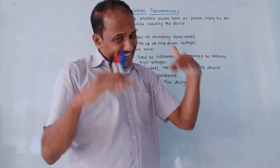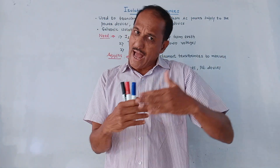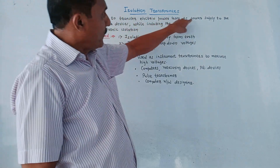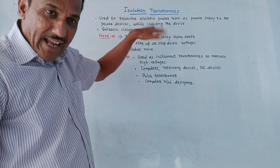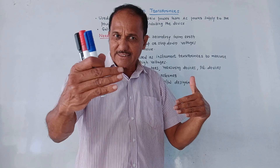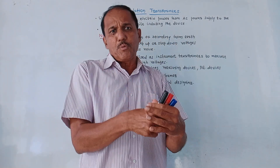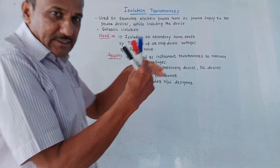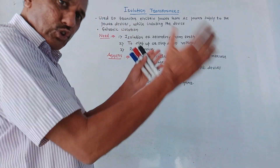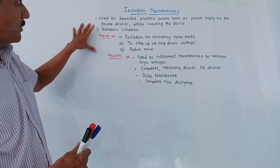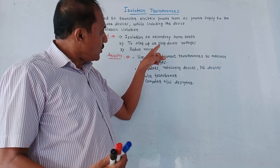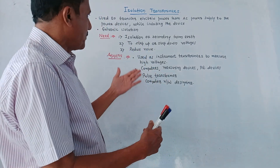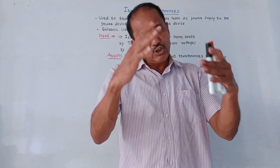Next is isolation transformers. As the name indicates, these are transformers used to isolate the power devices from AC mains. They transfer electric power from an AC power supply to the power devices while keeping the devices isolated. Like a normal transformer, it has primary and secondary windings with no physical connection between them — this provides galvanic isolation. The need for an isolation transformer is to get isolation of secondary windings from earth, it can be used as step-up or step-down, and an important advantage is to reduce down the effect of noise.